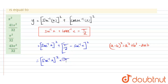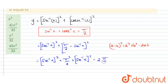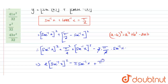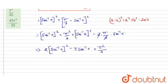Expanding: y = (sec⁻¹x)² + π²/4 + (sec⁻¹x)² − 2·(π/2)·(sec⁻¹x). The 2 cancels, giving y = 2(sec⁻¹x)² − π·(sec⁻¹x) + π²/4.